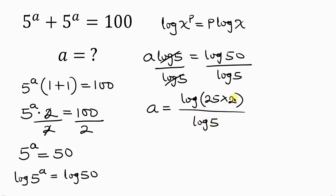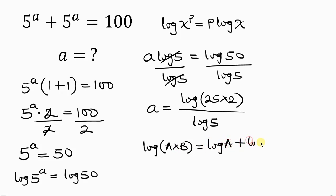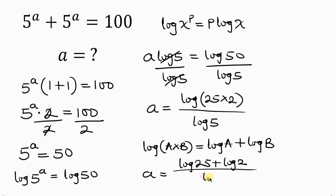Let's pay attention to the numerator. This expression is the same as log of a times b. The multiplication law of logarithm says that log of a times b can be expressed as log a plus log b. So we can write a equal to log 25 plus log 2, all over log 5.